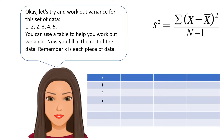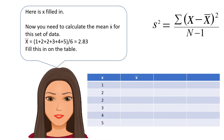Let's try and work out variance for this set of data: 1, 2, 2, 3, 4, and 5. You can use a table to help you work out variance. Fill in the rest of the data for X. Now you need to calculate the mean, X-bar, for this set of data. X-bar is 1 plus 2 plus 2 plus 3 plus 4 plus 5 divided by 6, which equals 2.83.